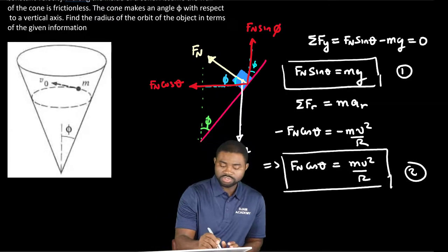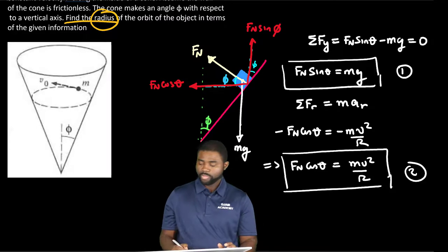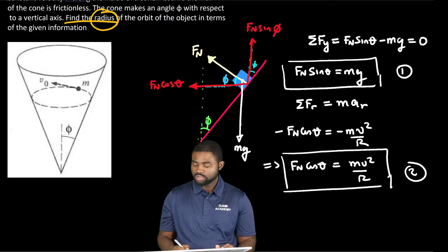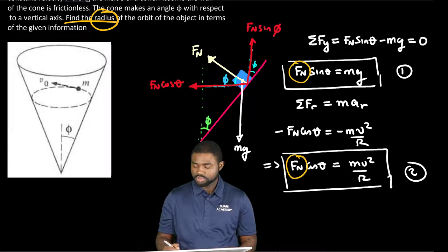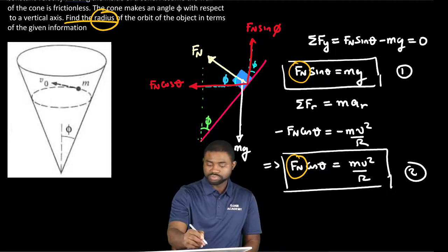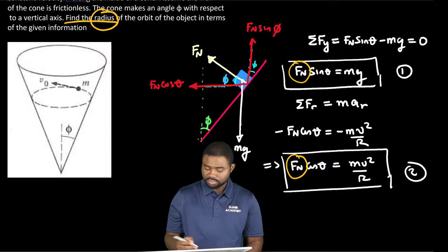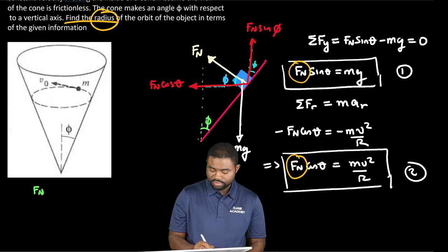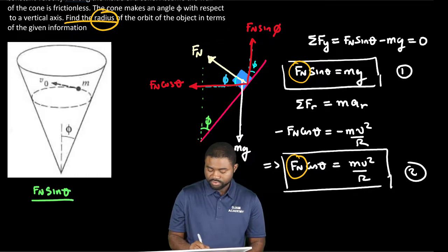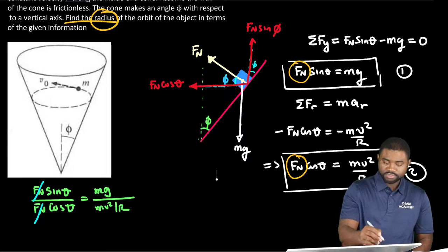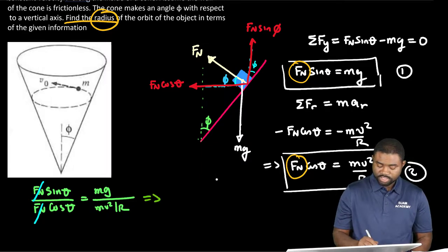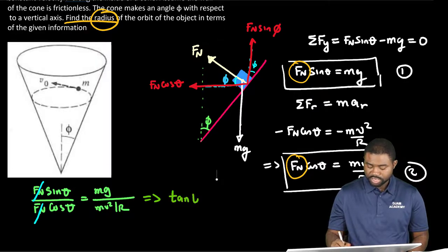So the question is for us to calculate the radius. How do we calculate the radius? We need to get rid of FN. And the best way for us to get rid of FN is to divide equation 1 by equation 2. So if we divide equation 1 by equation 2, we will have FN sine theta divided by FN cosine theta. This will be equal to mg divided by m v squared divided by r. You can see that the FN is cancelled. Now sine theta over cosine theta is simply the tangent of theta. The m's go away. So you will have rg divided by v squared.